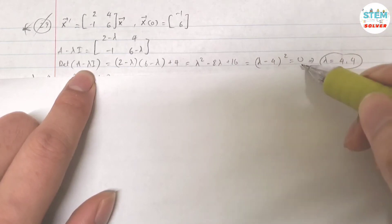Set this equal to 0, solve for lambda, you will get lambda equals 4 and 4. Repeated answers, repeated values.